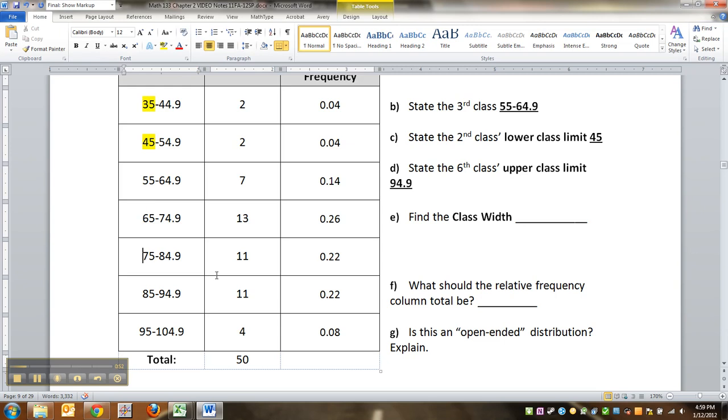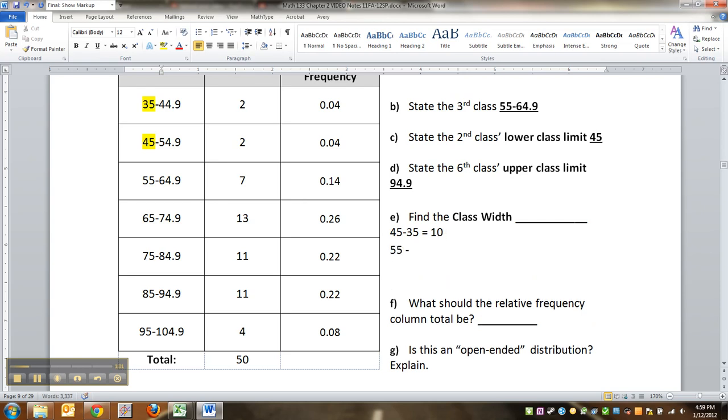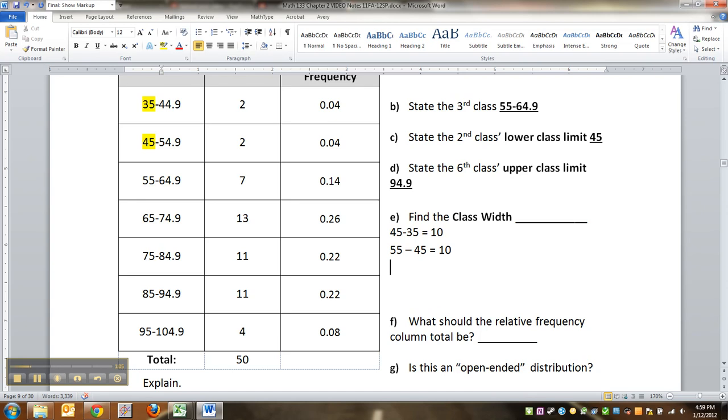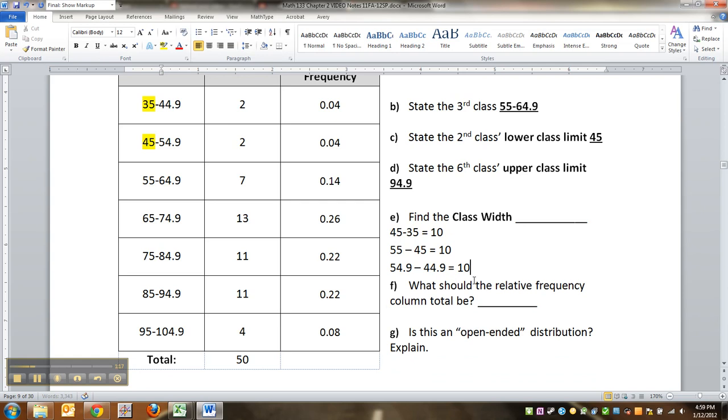So you say, okay, 45 take away 35, that's 10. Notice that 55 take away 45, that's 10. Or you could do it with upper class limits technically. 54.9 take away 44.9, that's 10. The difference between consecutive either lower or upper class limits. So either way you slice it, it's 10 every time.